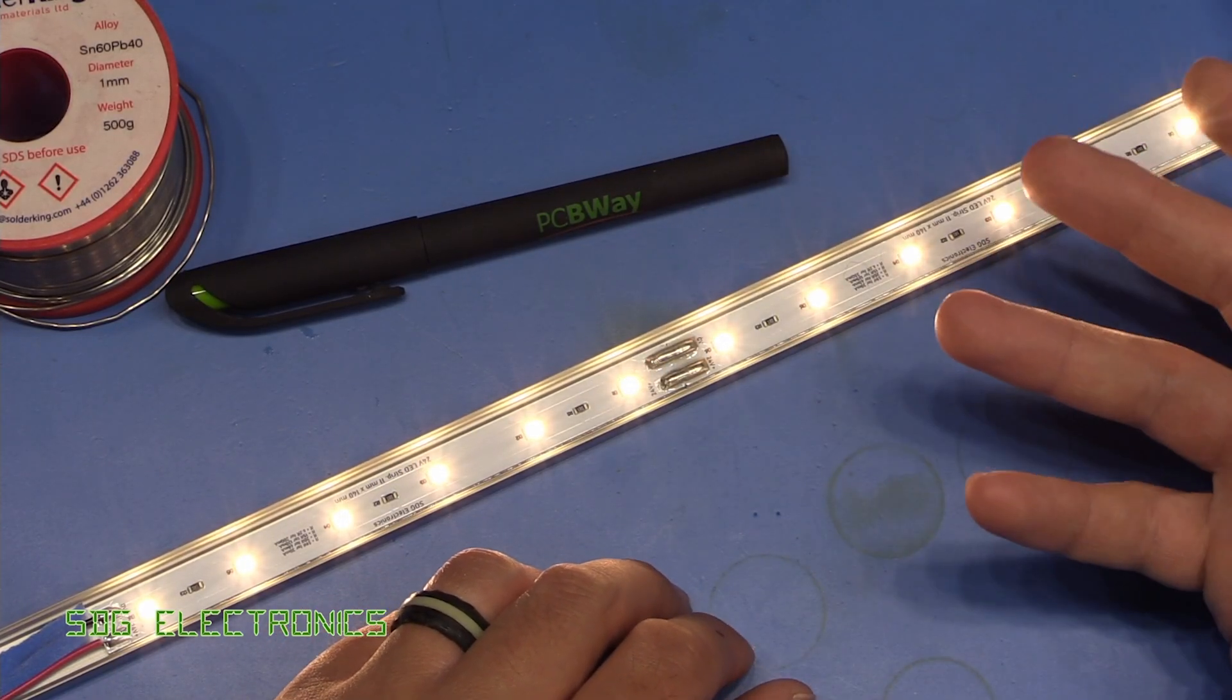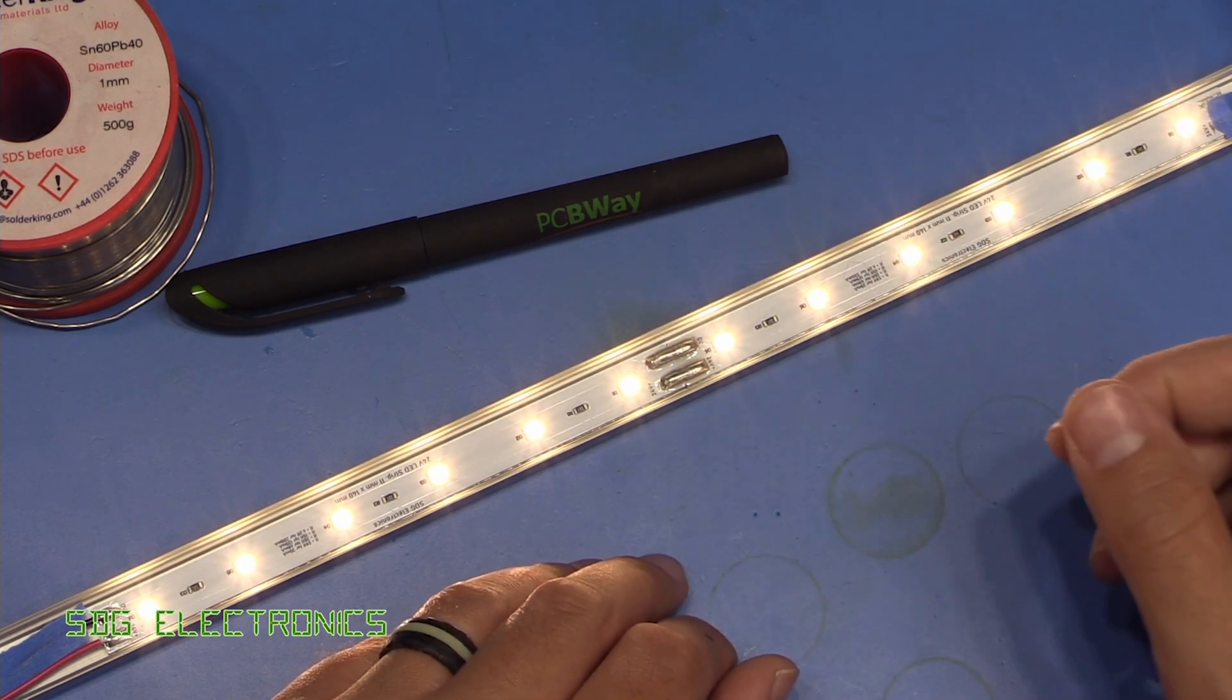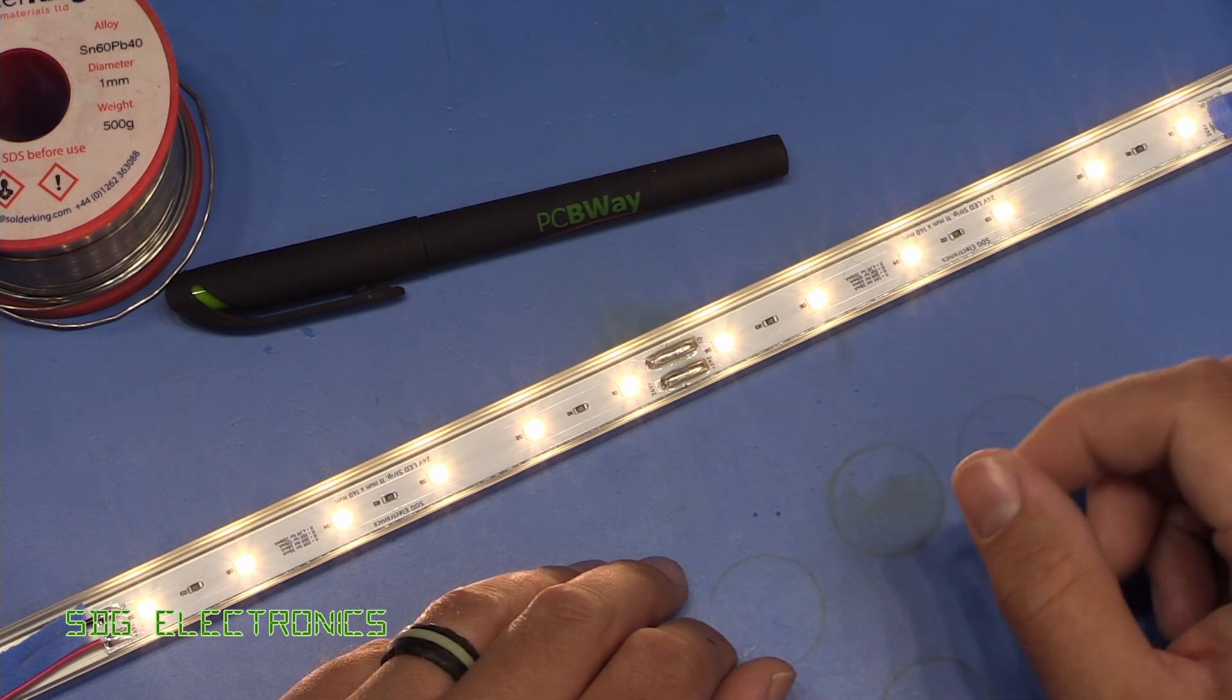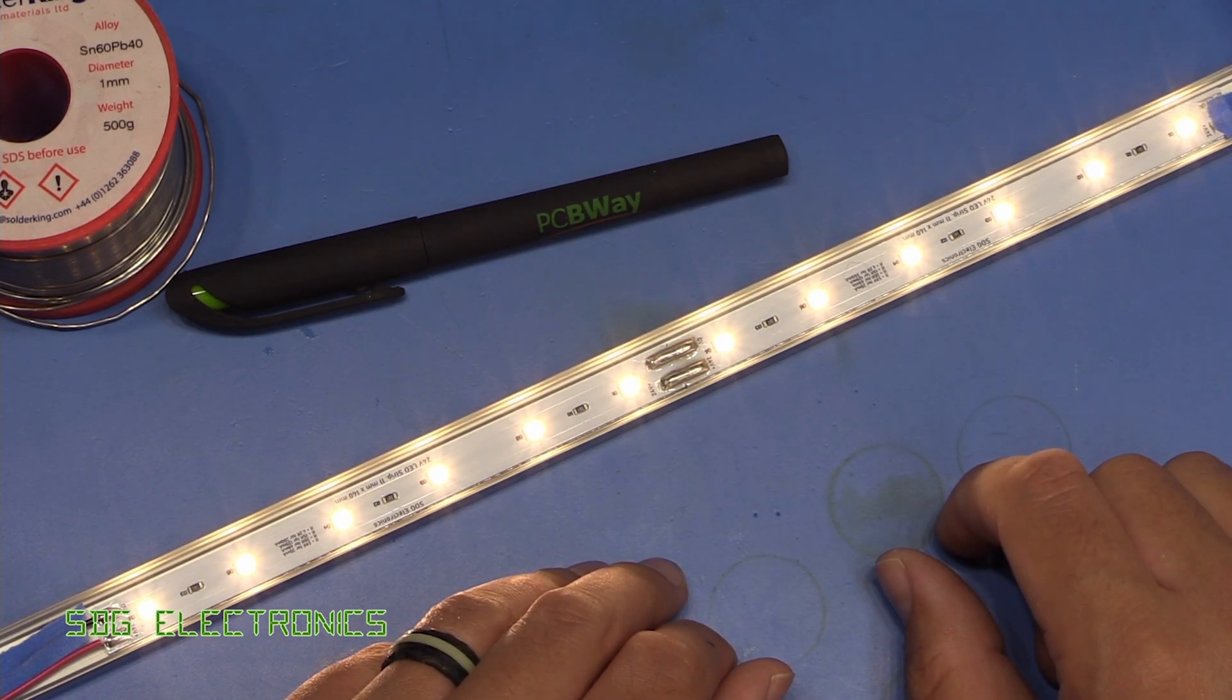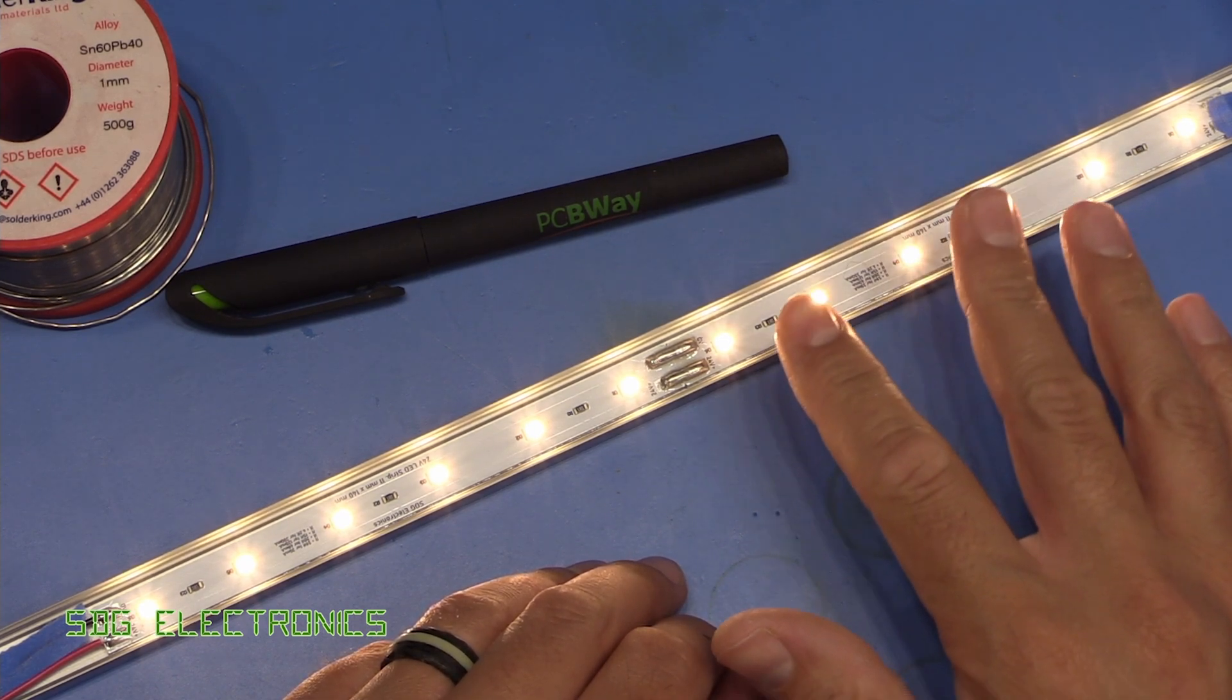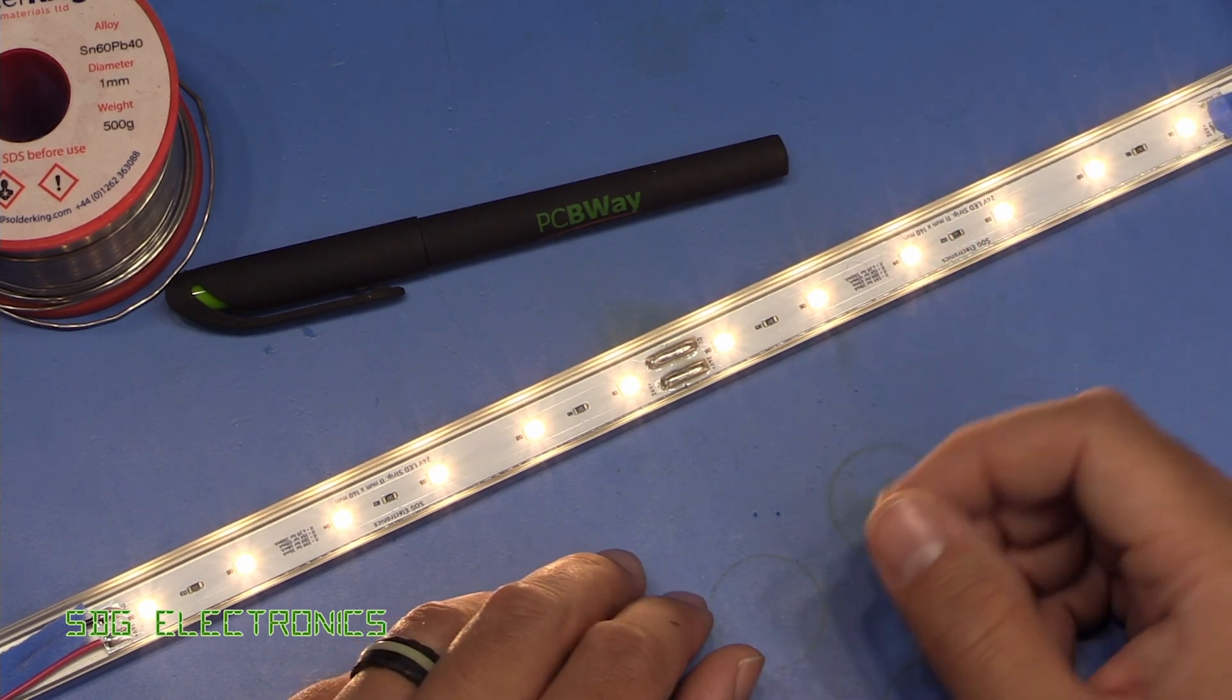So we might, in the next video, take one of these DIN rail power supplies apart and see if we can just modify it on the PCB. Because I imagine, although some of these do have alarms for if the voltage has dropped, I think I've got a fairly basic one. We might just be able to adjust the feedback on this AC to DC converter and just get our 20 volts output. And then I'll be able to drive these just with a PWM output from my LED control boards.